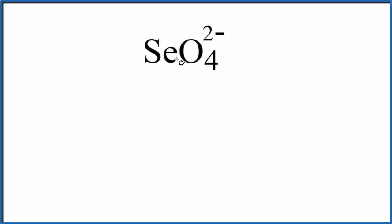So Se, selenium, that's in group 16, sometimes called 6A. It has 6 valence electrons. Oxygen is in the same group. We have 4 oxygen atoms.